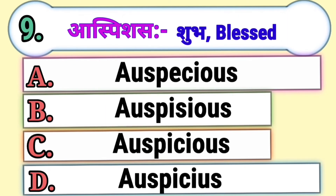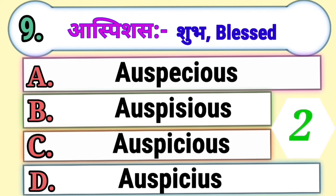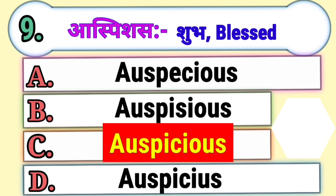Question 9. Auspicious means Shubh or Blessed. Which of the following is the correct spelling of auspicious? Option A, Option B, Option C, or Option D. The correct answer is Option C, Auspicious.